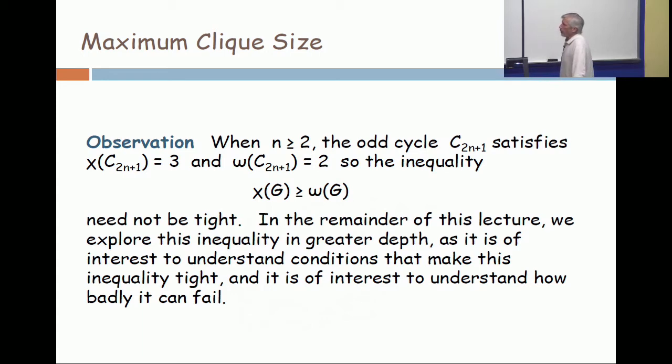Now, when people first started thinking about this, it was believed that the chromatic number was always either the maximum clique size or the maximum clique size plus one, that it just hinged right there. But that turns out not to be true at all.